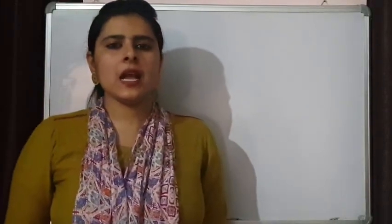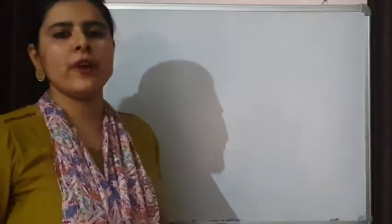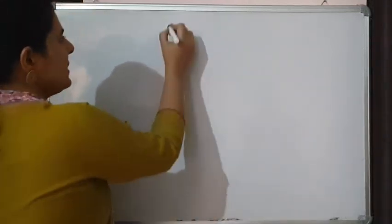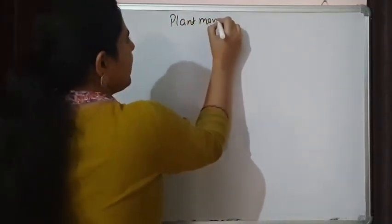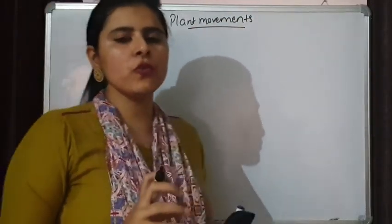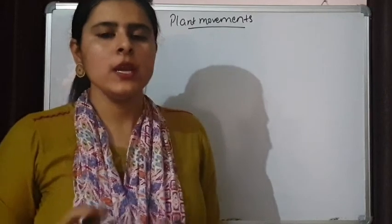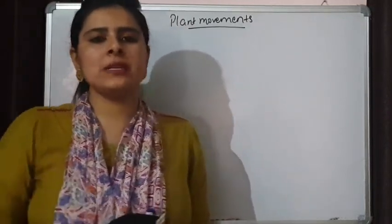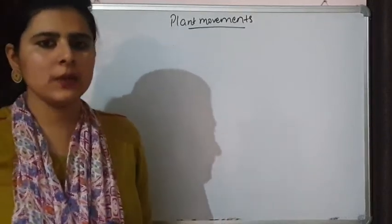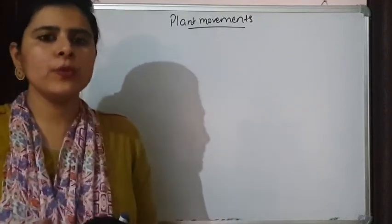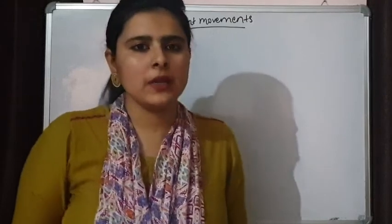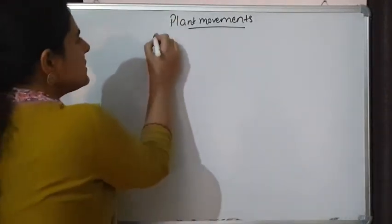Good morning students. In our last class we discussed about phytohormones, plant hormones. Today we are going to talk about plant movements. Last time I told you that plant movements are of two types: growth movement and non-growth movement. Growth movement means movement in which growth of any part of the plant is taking place. Non-growth movement means movement is there but there is no growth in any part of the plant. Today we are going to discuss the growth movements.